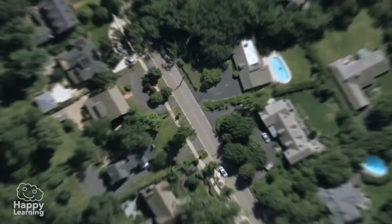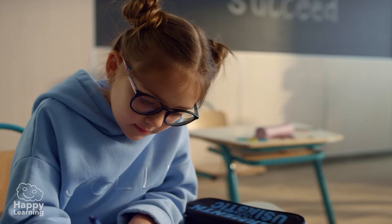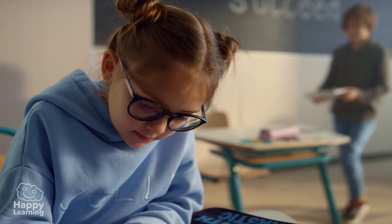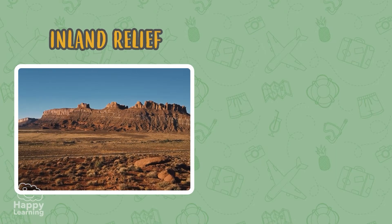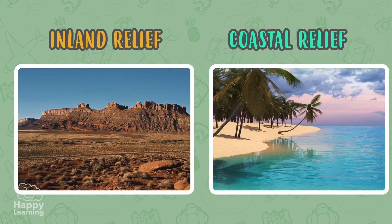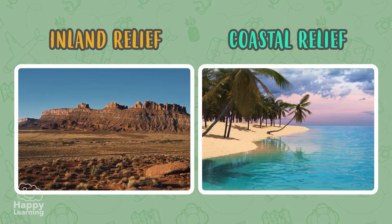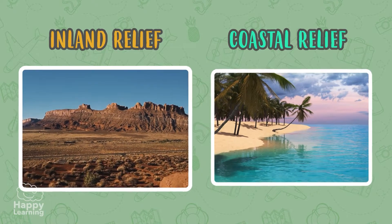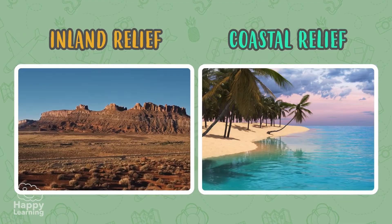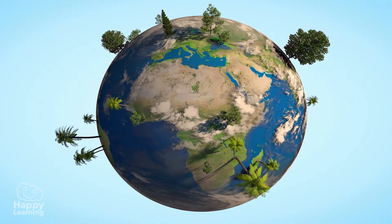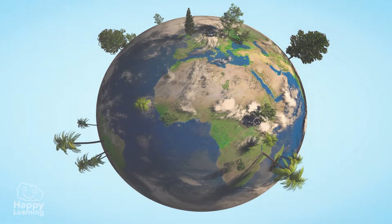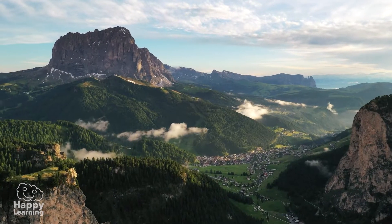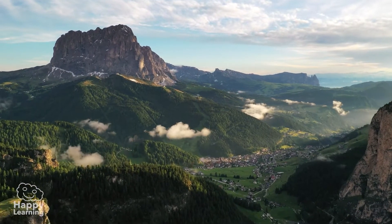As the Earth is very, very large, to study the relief we have divided it into two types: inland relief and coastal relief. The difference between one and the other is pretty obvious, don't you think? The inland relief is, as its name suggests, the one that is in the interior, and has three forms of relief.